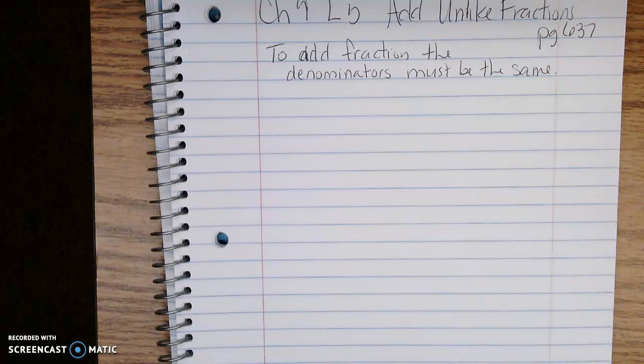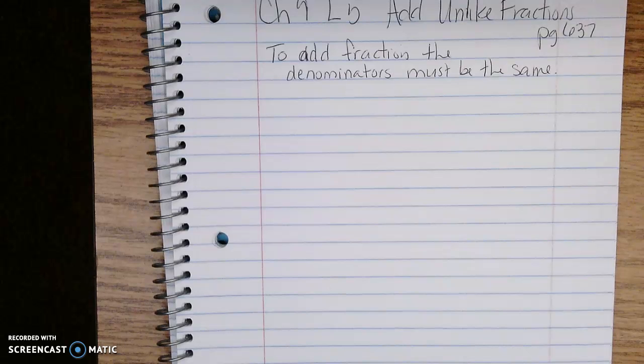What happens if I need to add fractions whose denominators are unlike, meaning they are not the same? I have to make equivalent fractions to one or both of my addends in order to have fractions that do have like denominators.